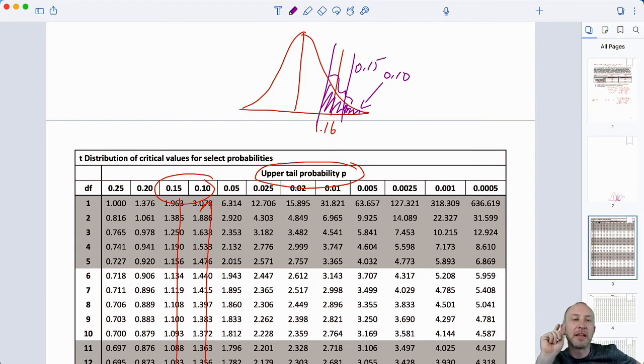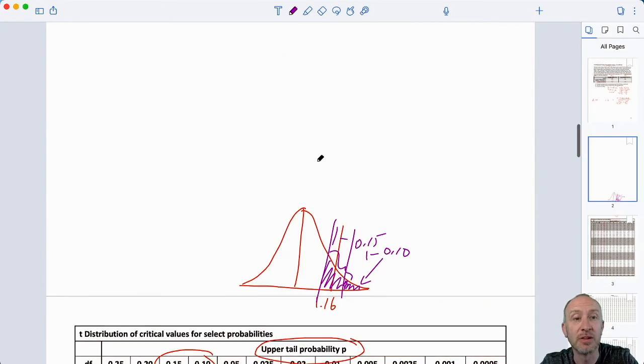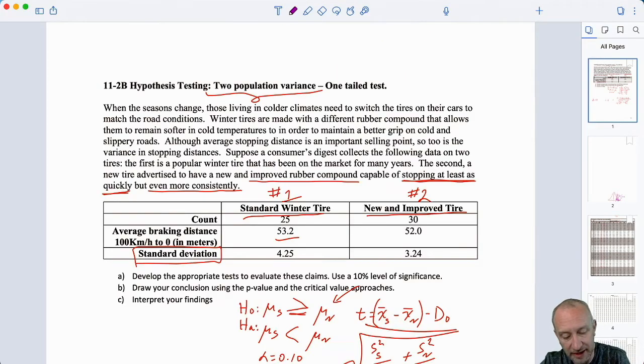But remember, we're doing a lower tail test, which means I want a lower tail probability. So, I want 1 minus 0.15 and 1 minus 0.1. Because again, we're doing a lower tail test. So, my p-value must come from the lower tail.